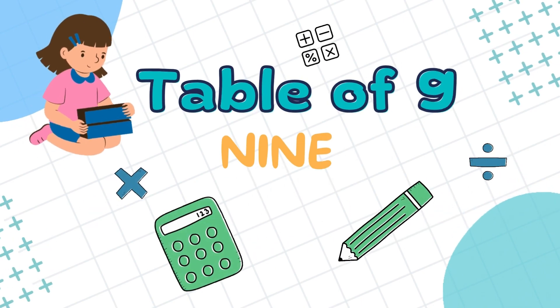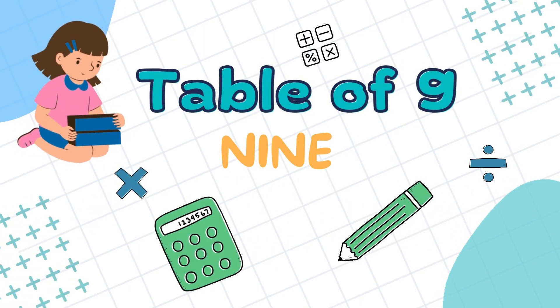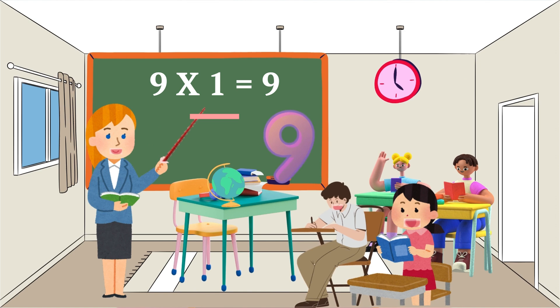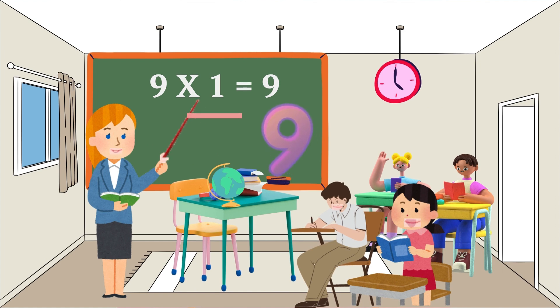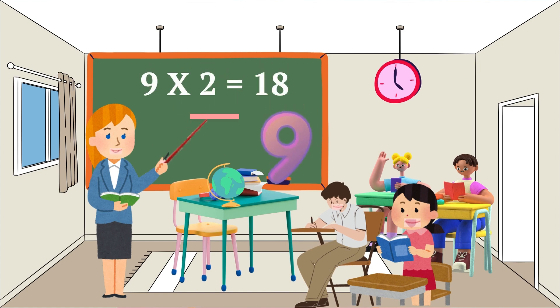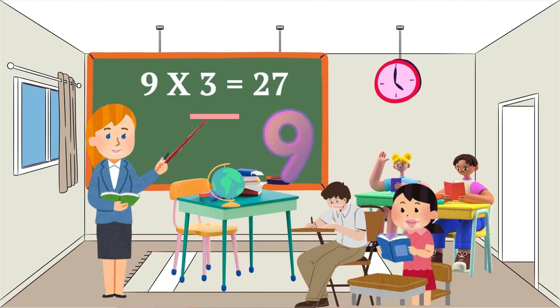Table of 9. 9 ones are 9, 9 twos are 18, 9 threes are 27.